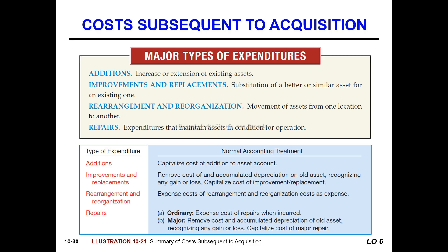The repair expenditure is to maintain the asset in a condition for operation — it is expensed. The improvement and replacement cost is to be capitalized. The rearrangement cost should be recognized as an expense. The repair is expensed when the expenditure only maintains current condition.